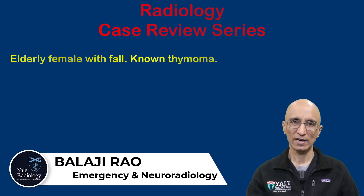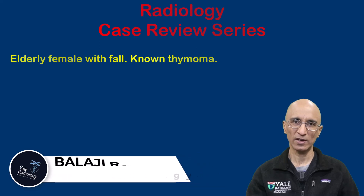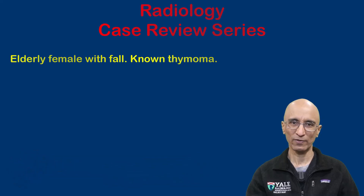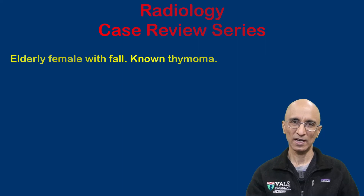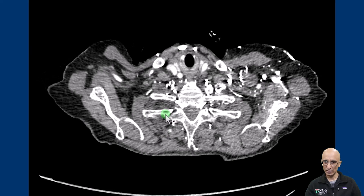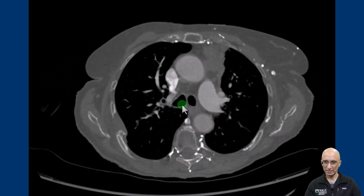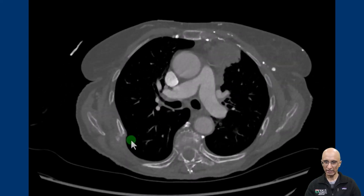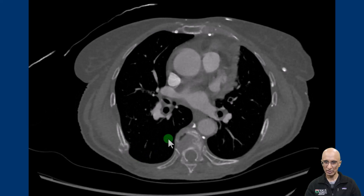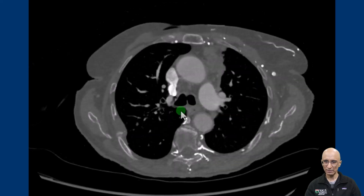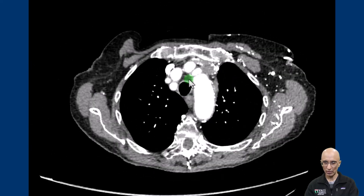The patient had a known diagnosis of thymoma. On the chest radiograph we saw multiple right-sided rib fractures, which led to CT examination as part of a trauma series workup. As we scroll through the CT examination on the bone window, we can see multiple right-sided rib fractures, some of which look subacute, which was also seen on the chest radiograph.